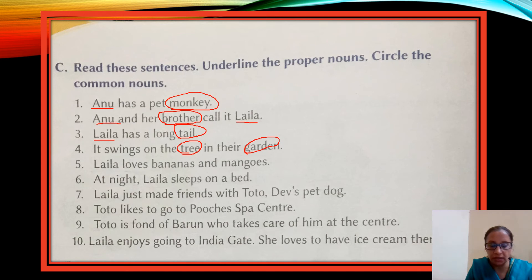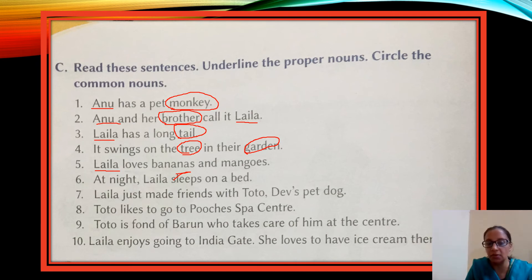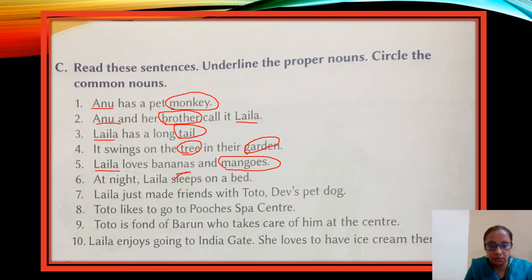Sentence 5: 'Laila loves bananas and mangoes.' Laila is a proper noun — underline it. Bananas and mangoes: these name specific types of fruit, but which bananas or mangoes is not clear, so we will put them under common nouns. Sentence 6: 'At night Laila sleeps on a bed.' Laila — proper noun. Bed — it is a thing, but which bed is not clear, so it is a common noun.